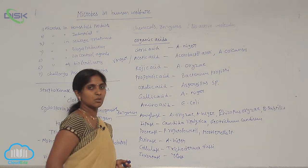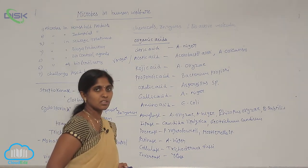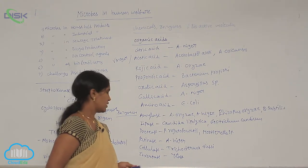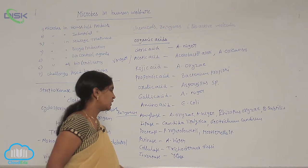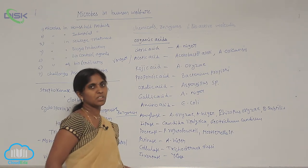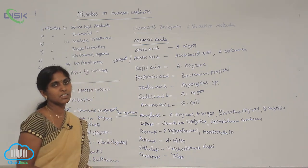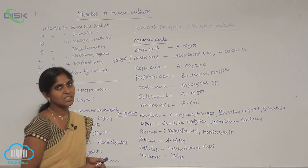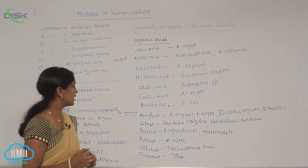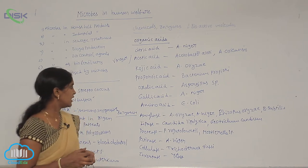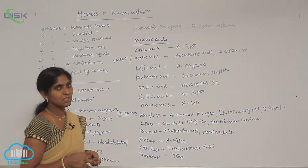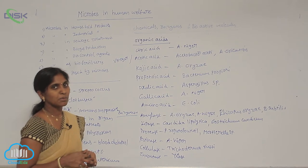Cellulases are cellulose-digesting enzymes obtained from Trichoderma reesei. Invertase is obtained from cultures of the yeast Saccharomyces cerevisiae. Many enzymes are obtained from microorganisms commercially.